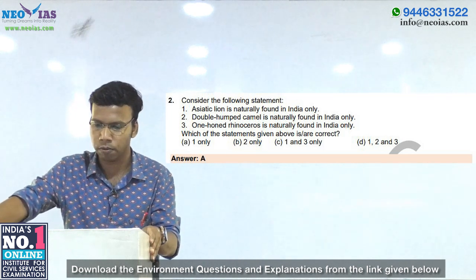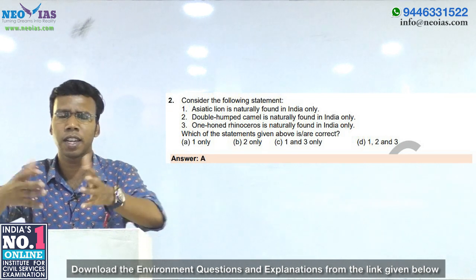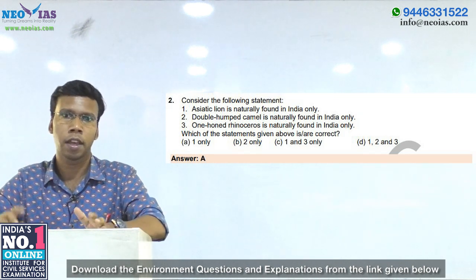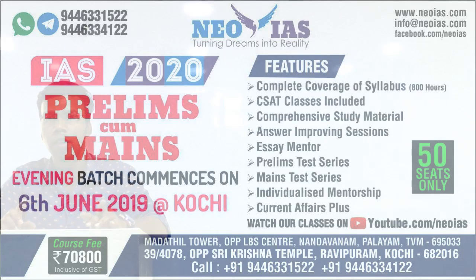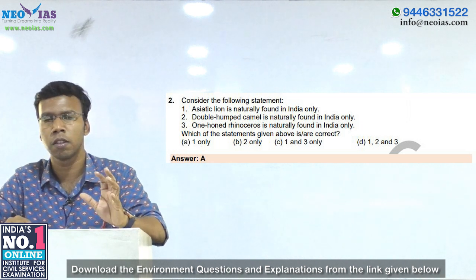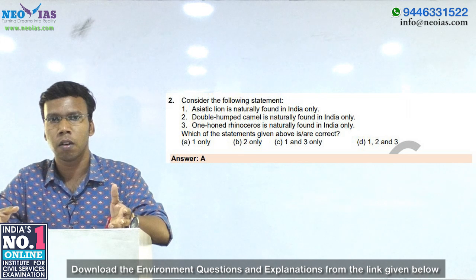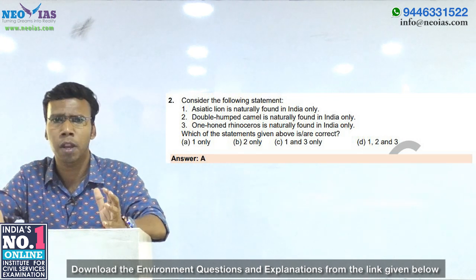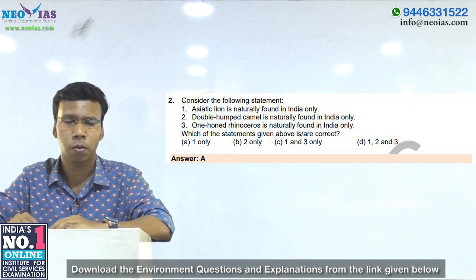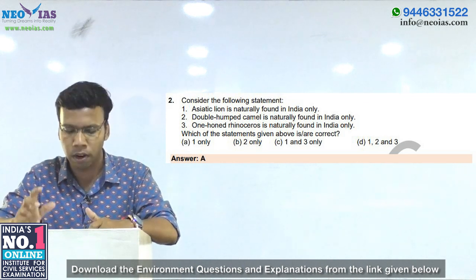Coming to the third statement: one-horned rhinoceros is naturally found in India only. That was also a current event regarding rhinoceros. India has a large number of one-horned rhinoceros, and one-third of the world population is in Kaziranga. Last year, due to floods in some tributaries of the Ganga river, some rhinoceros from Valmiki National Park were moved to Nepal's Royal Chitwan National Park — that was a current event. So Nepal also has a viable population of rhinoceros. That is why the third statement is also wrong. With statements 2 and 3 wrong, the answer is A — statement 1 only.